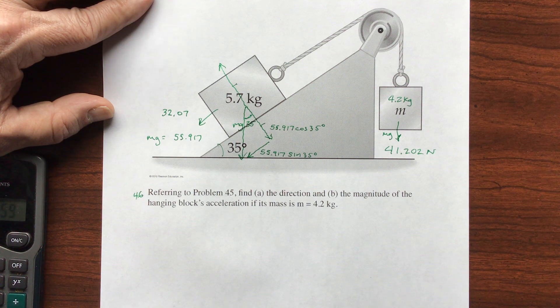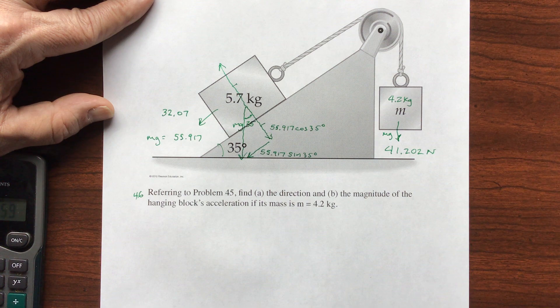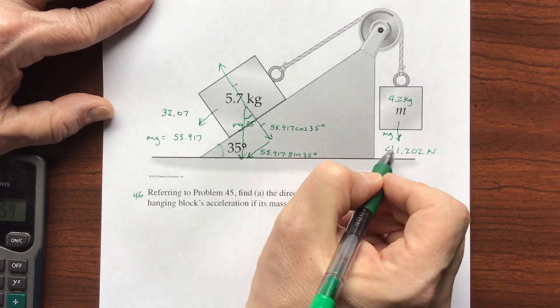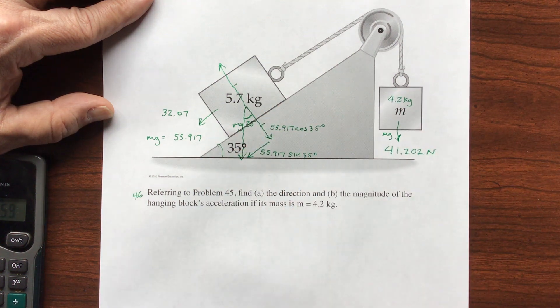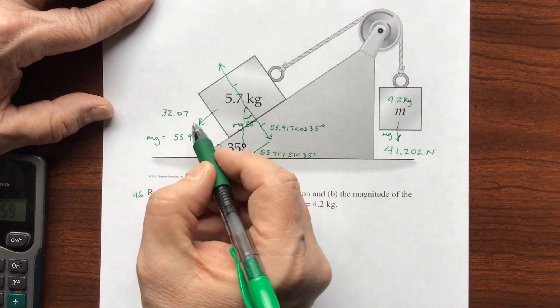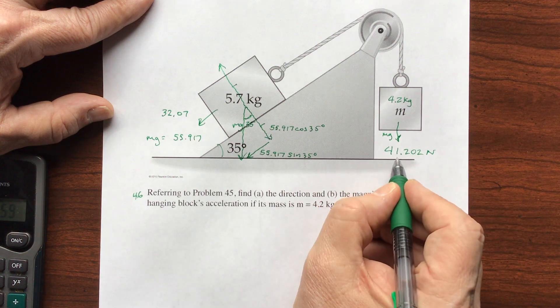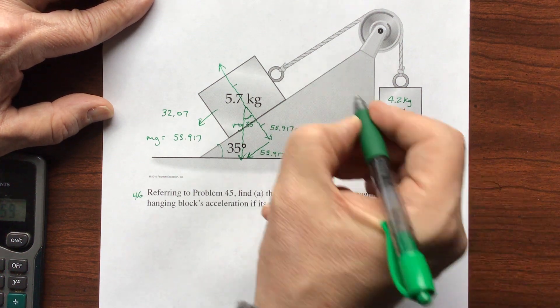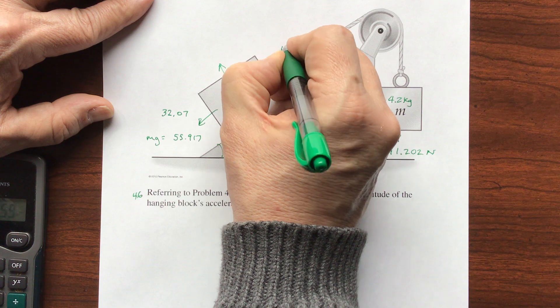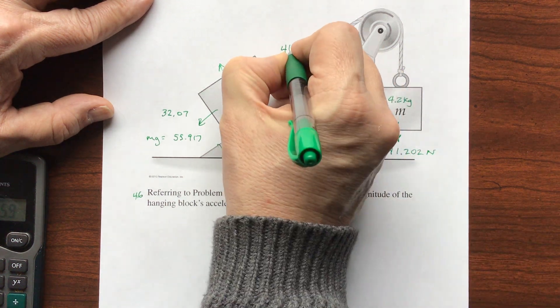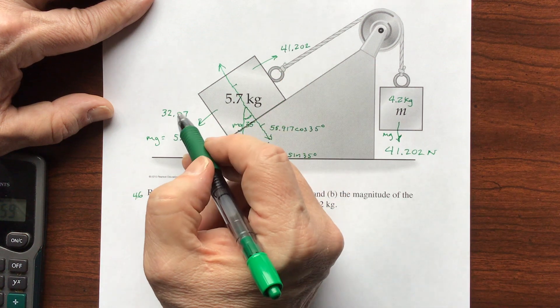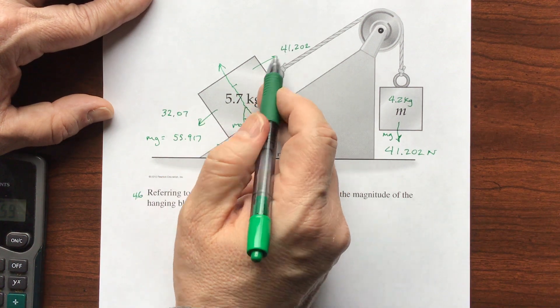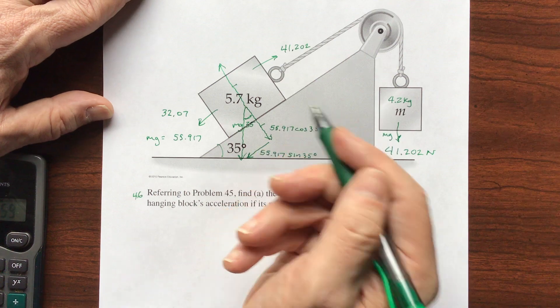So what we got? First of all, we need to see, is this one going to tug the string down and descend, or is this one going to tug it up and make it ascend? I've got 32 down, I've got 41 going this way. That means in this direction I've got a force of 41.202. So these two are going to battle it out. This one loses. So this is going to climb up the slope slightly.